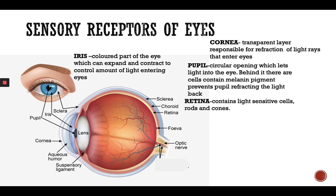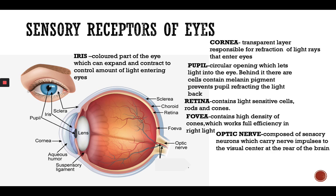The retina contains light-sensitive cells called rods and cones. By these light-sensitive cells we can see in both bright light and dark. The fovea contains a high density of cones which work at full efficiency in bright light. The optic nerve is composed of sensory neurons which carry nerve impulses to the visual center at the rear of the brain.